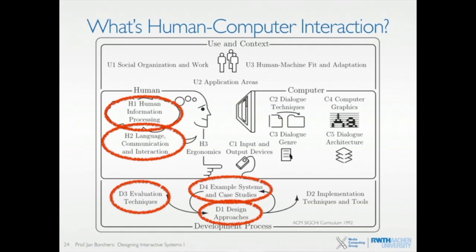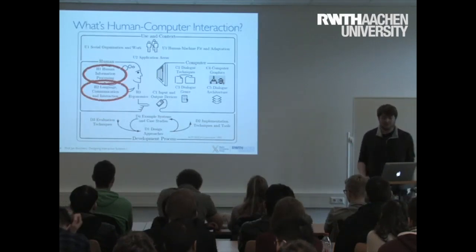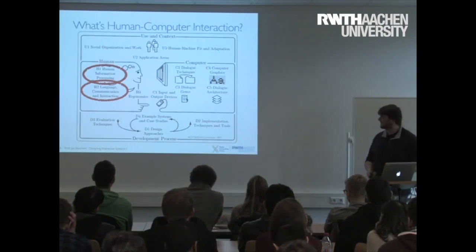What we are looking at more is: how does a human process information? How fast can they do something? What is easy to accomplish? What is easy to remember? And when a user encounters a new product, how do they build a mental model of how it should or will work? How does interaction with the system occur in general? Keep in mind this part stays the same because the brain doesn't evolve that fast.